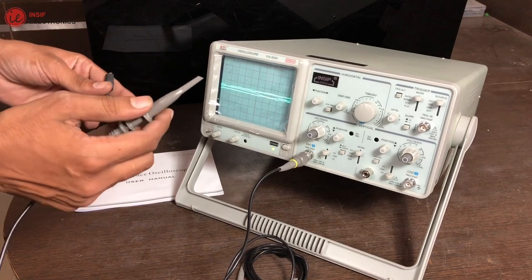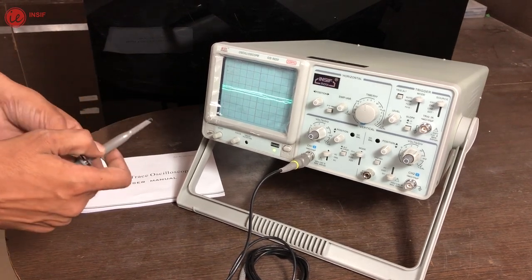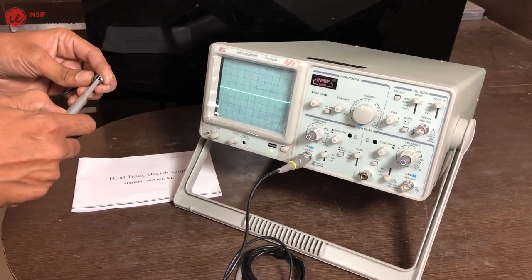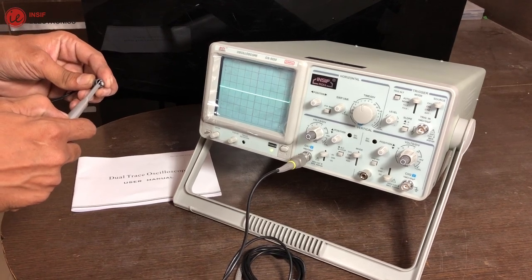As we can see the noise, this is due to our hand, so let's short the probe, and now noise is gone, as the input is grounded.